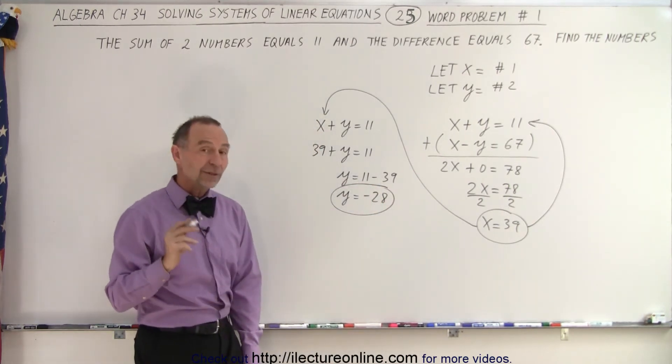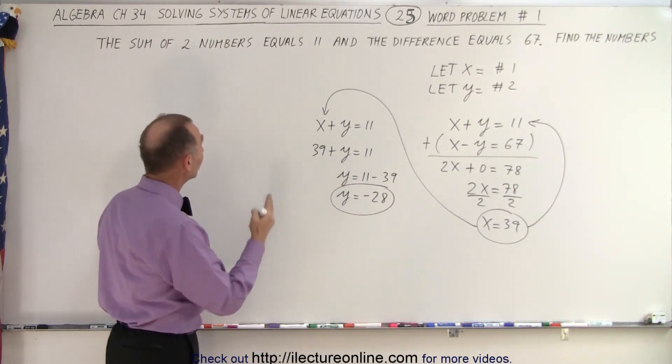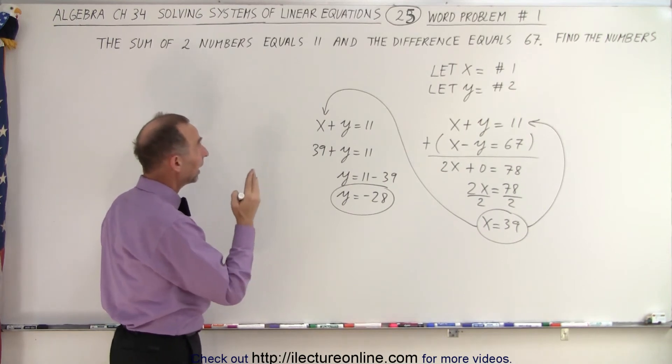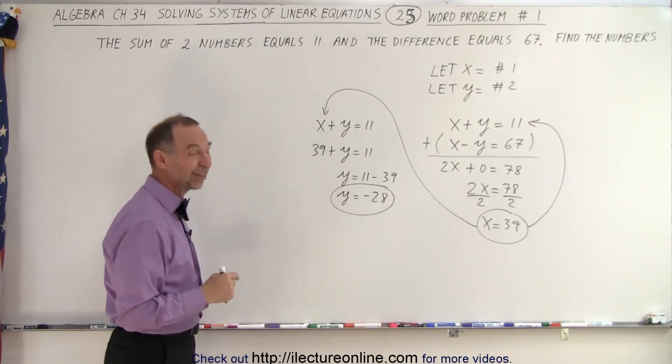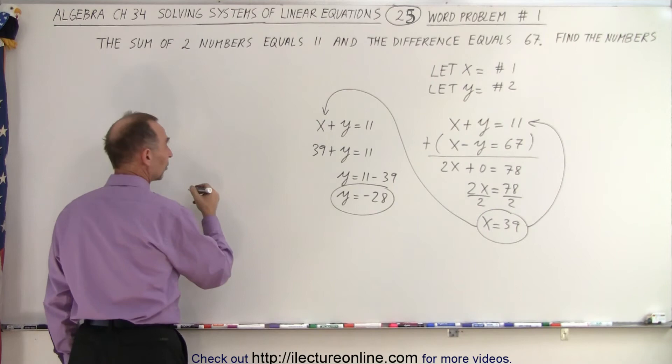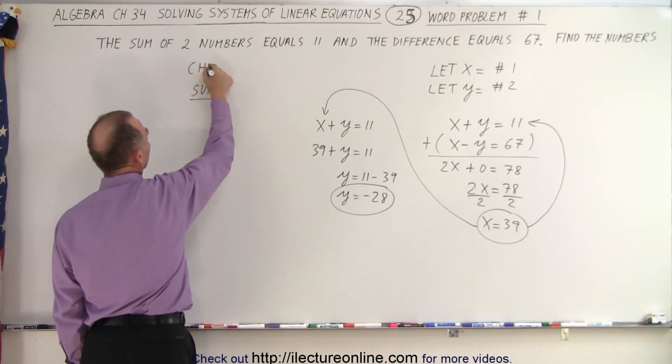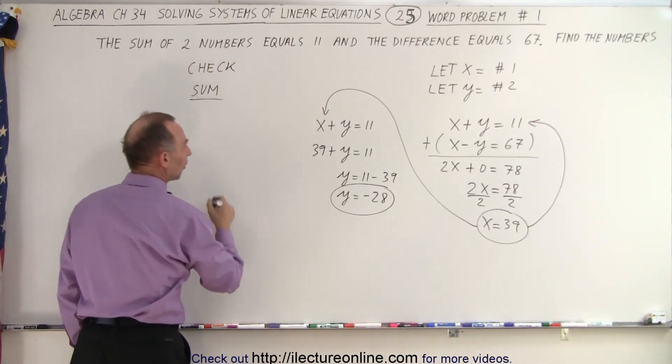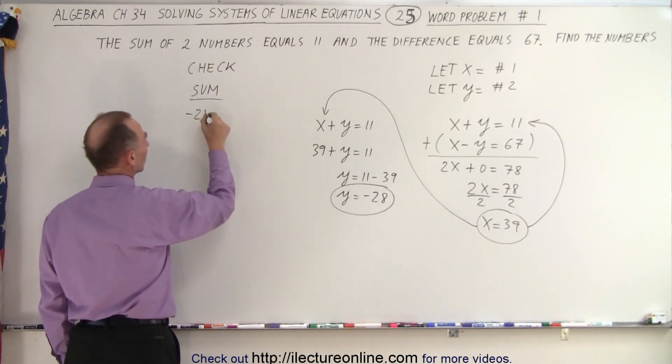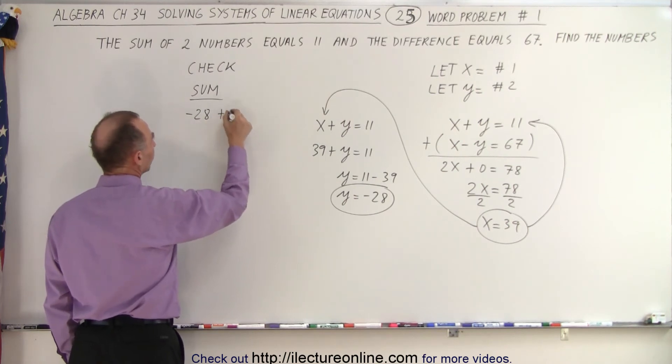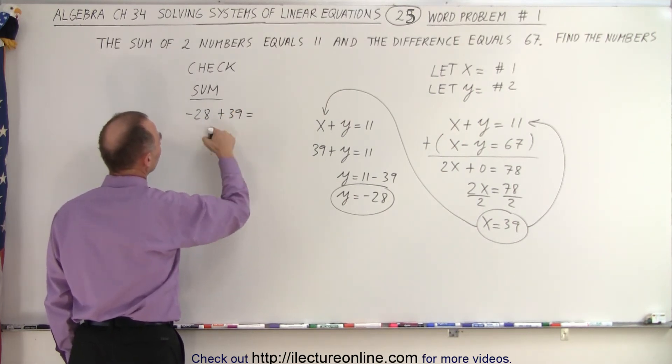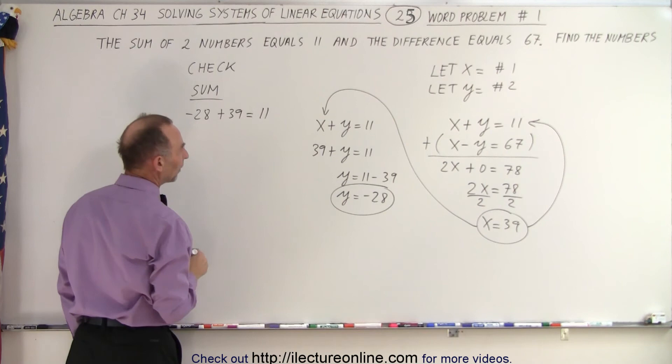Now, how do we check if this was correct? Well, we're given that the sum is 11 and the difference is 67, so let's try that. Let's do the sum first. We're going to check: negative 28 plus 39 equals 11. How about the difference?